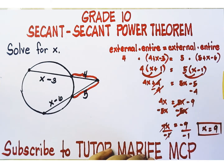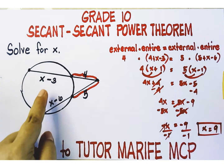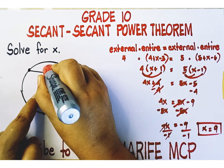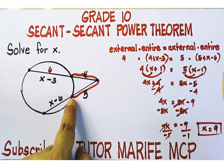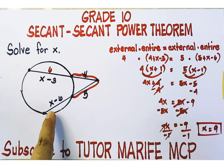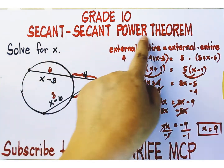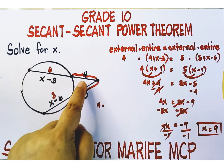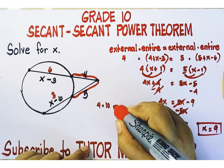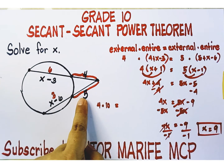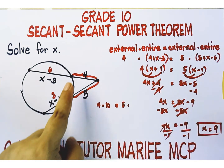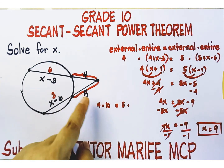This is our answer. Let's validate it. If x equals nine, the internal part of the first secant segment is nine minus three, or six units. The internal part of the second secant segment is nine minus six, or three units. Applying the secant-secant power theorem: the external part four, multiplied by the entire secant segment four plus six equals ten, equals the external part five multiplied by the entire secant segment five plus three equals eight.